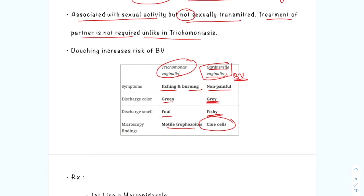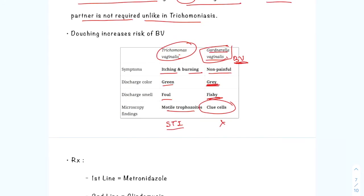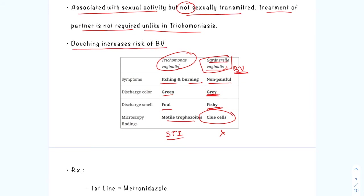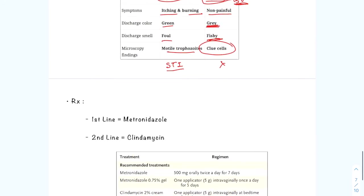Trichomonas vaginalis is sexually transmitted, so the partner must be treated as well. Gardnerella vaginalis is only sexually associated but is not sexually transmitted, so partner treatment is not required. Also, douching increases the risk of bacterial vaginosis.